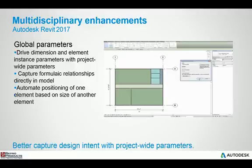A new feature introduced in Autodesk Revit 2016 R2 is Global Parameters. In 2017, Global Parameters is part of the software. Global Parameters allow you to create generic parameters that can be associated with other parameters to make design considerations and design situations have better relationships to each other.